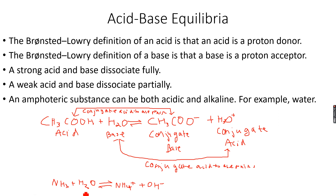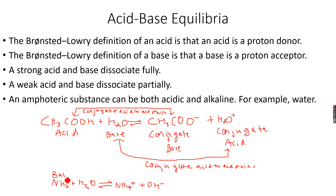In this case, NH3 accepts a proton from H2O to form an NH4⁺ ion, and in the reverse reaction, NH4⁺ donates a proton to form back NH3. So NH3 is acting like a base because it accepts a proton, and NH4⁺ is its conjugate acid because NH4⁺ donates a proton.